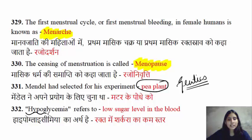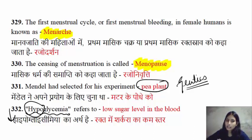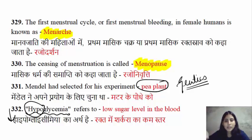What do you think about hypoglycemia? The word hypo means less, and glycemia refers to glucose. So if glucose in your blood is reduced, we call it hypoglycemia.